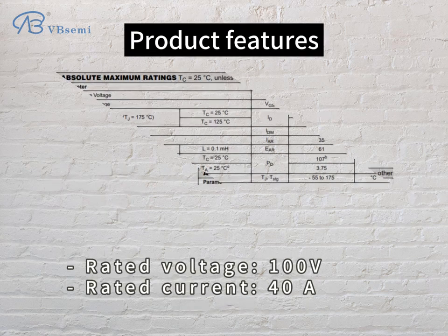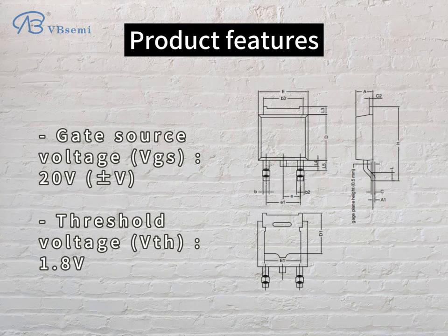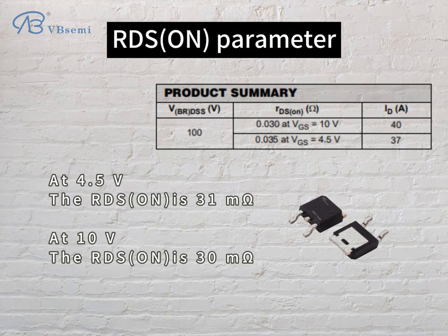Product features: Rated voltage 100V, rated current 40A. Gate-source voltage VGS 20V, threshold voltage VTH 1.8V. RDS(ON) parameter: at 4.5V the RDS(ON) is 31mΩ; at 10V the RDS(ON) is 30mΩ.